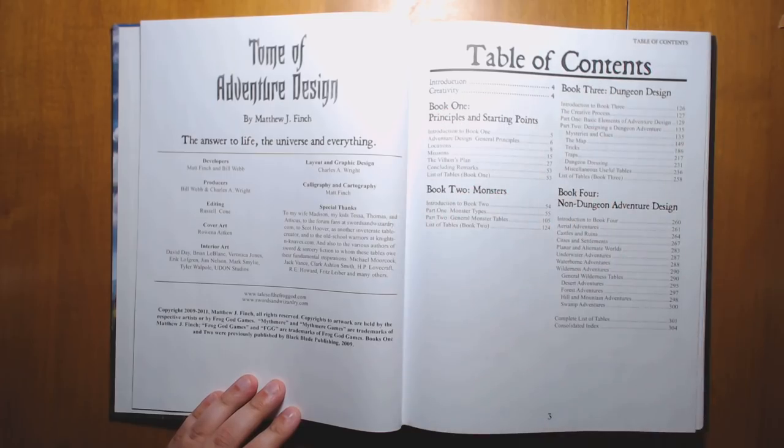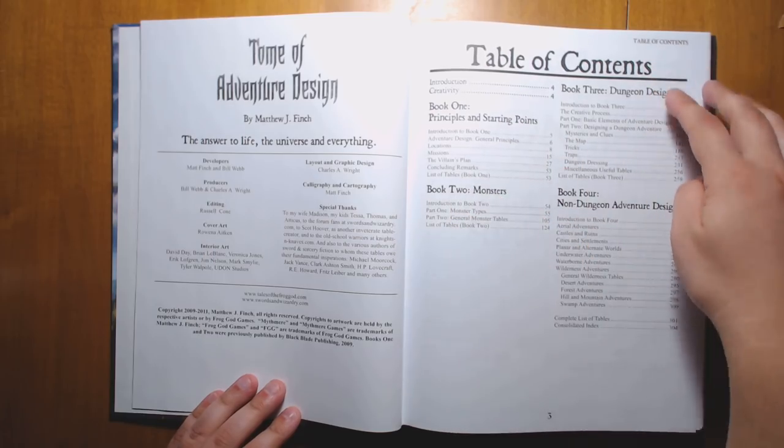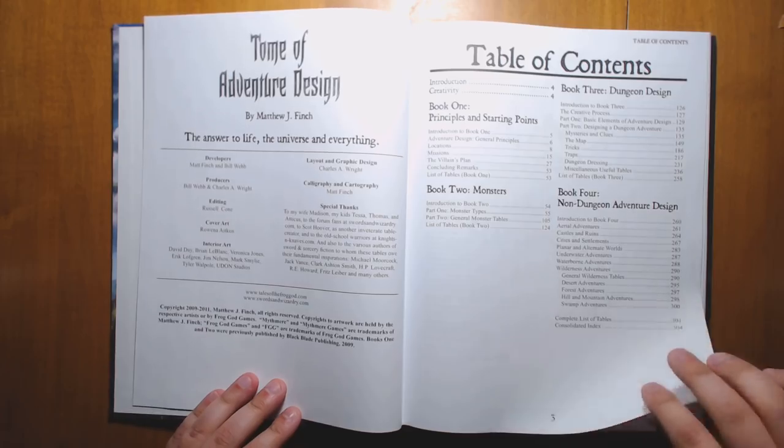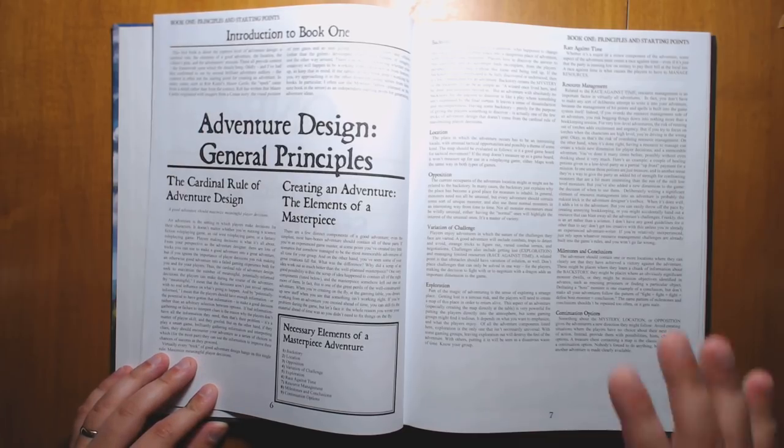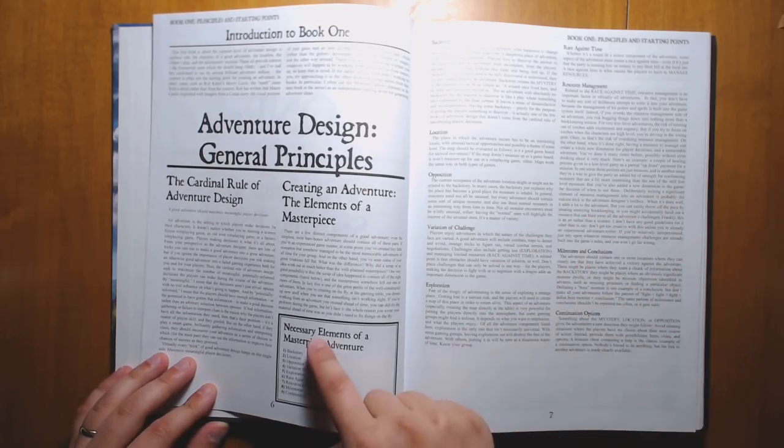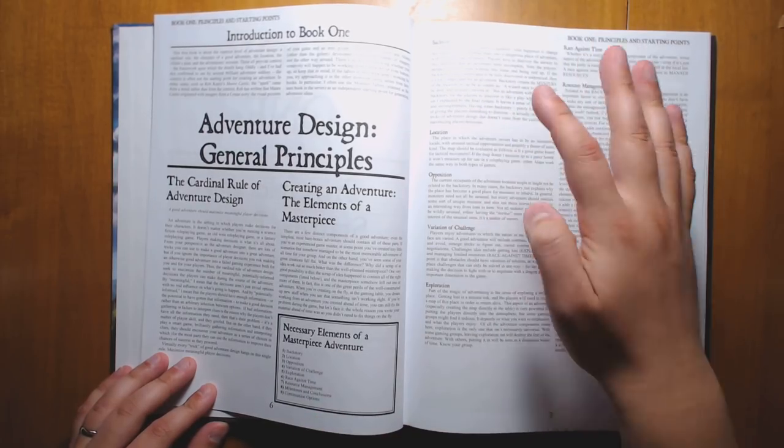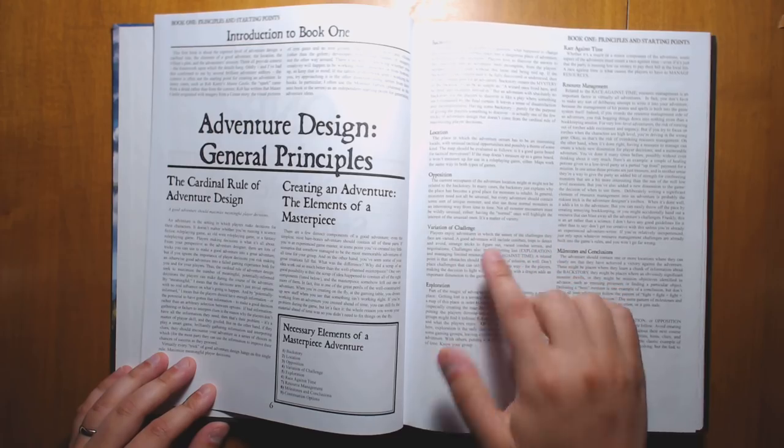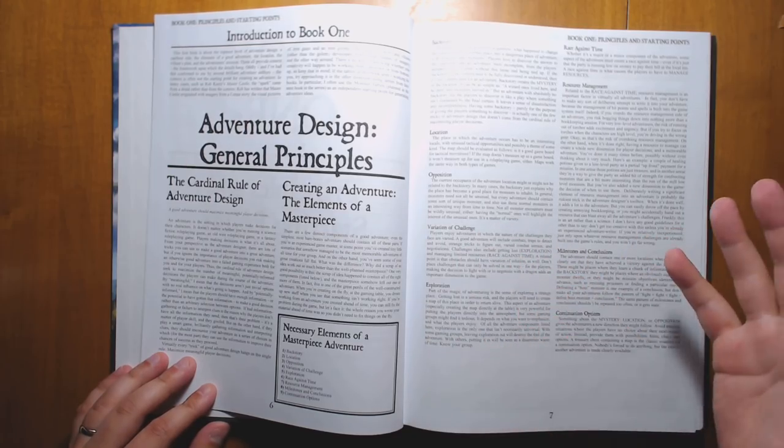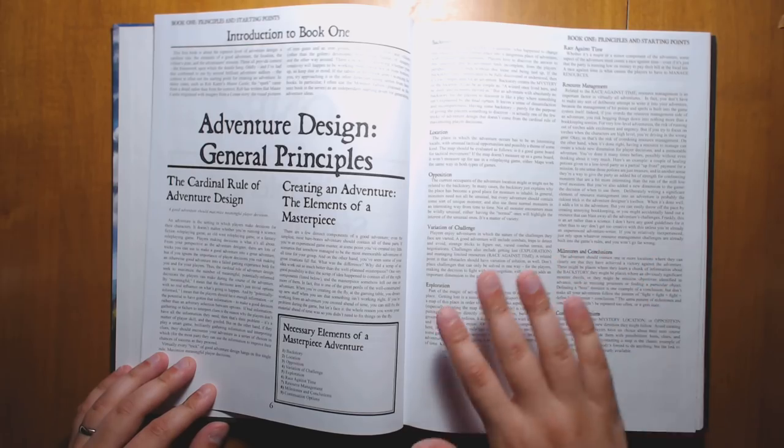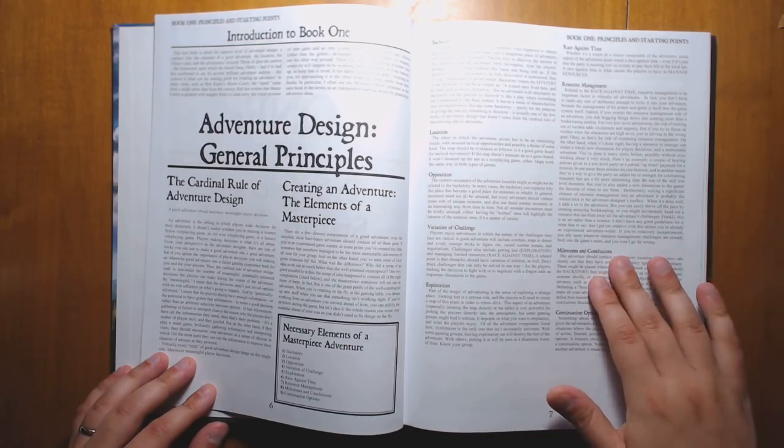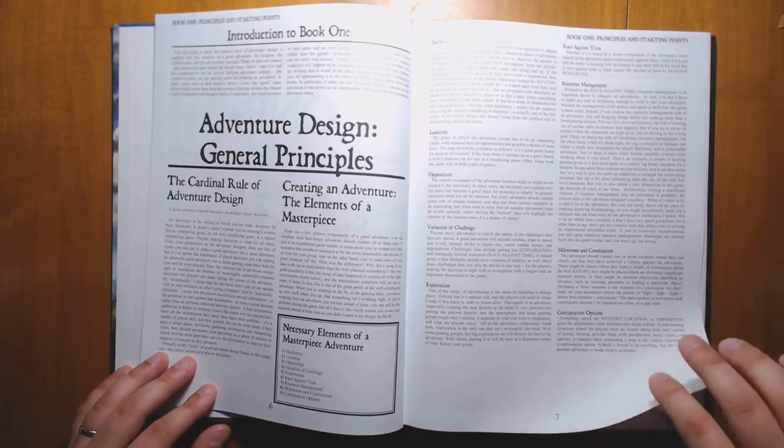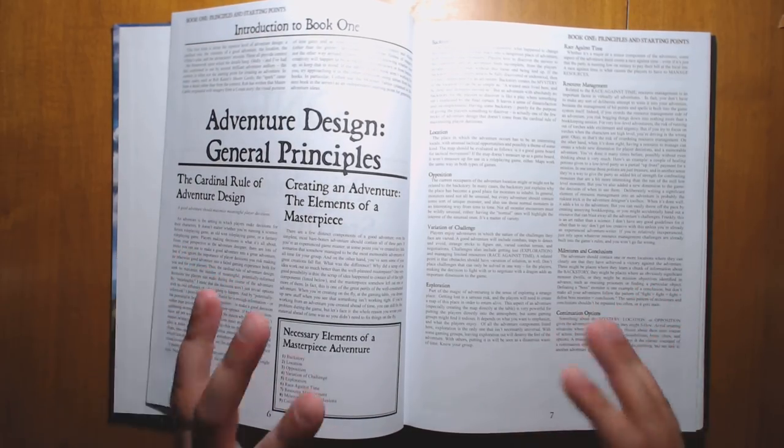It's broken into several different books, which I believe were published separately originally, but this is a compilation. Principles and Starting Points, Monsters, Dungeon Design takes up most of the book, and we have some non-dungeon design. As always, Matt Finch has a lot of fantastic principles and underlying theory for how the whole OSR adventure works.